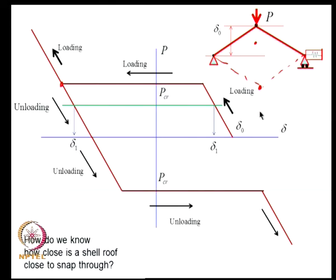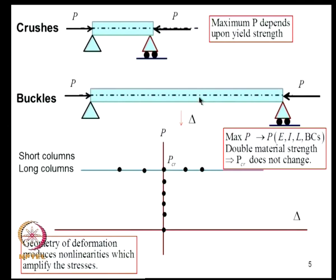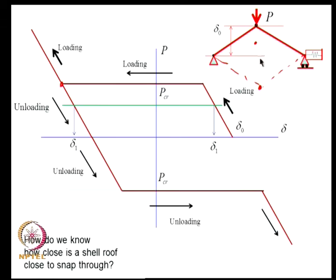If we start unloading from the snapped position, the unloading path does not retrace the loading path — it follows a different route. At some other point the structure snaps back. In snap-through problems, unlike classical column buckling, the new equilibrium position occupied upon loss of stability is far from the original configuration, not in its neighborhood.